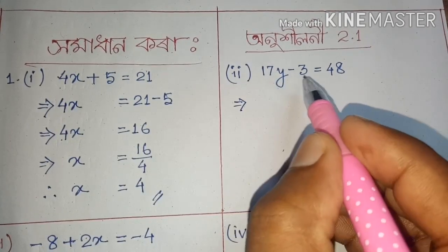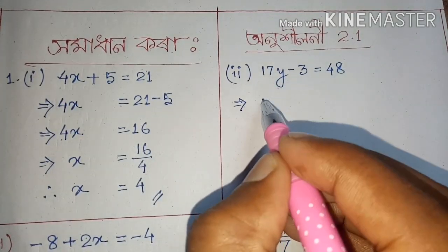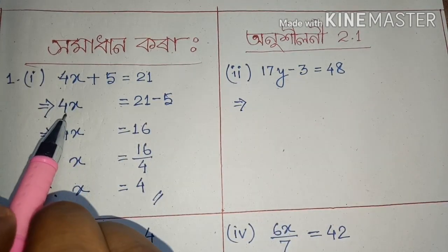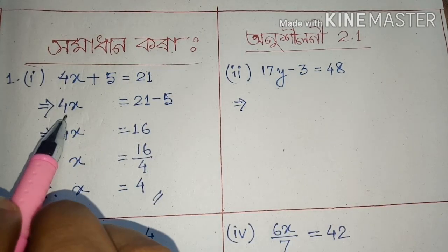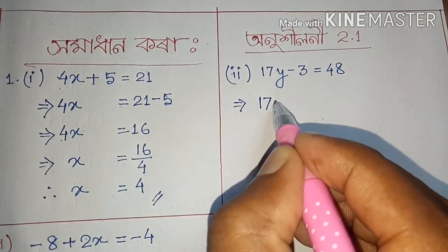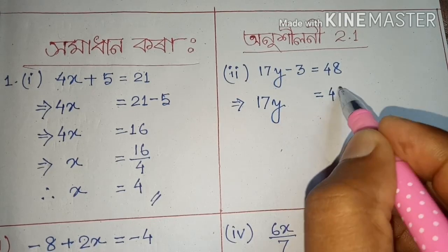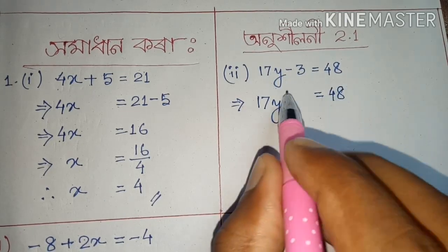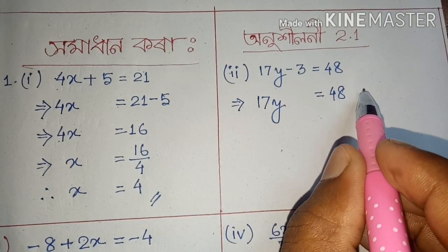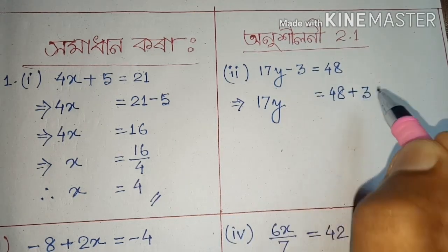17y minus 3 equals 48. Now for this question, 17y — look, equal to 48. The key here: the minus 3, we move it over, so minus 3 becomes plus 3 on the other side.